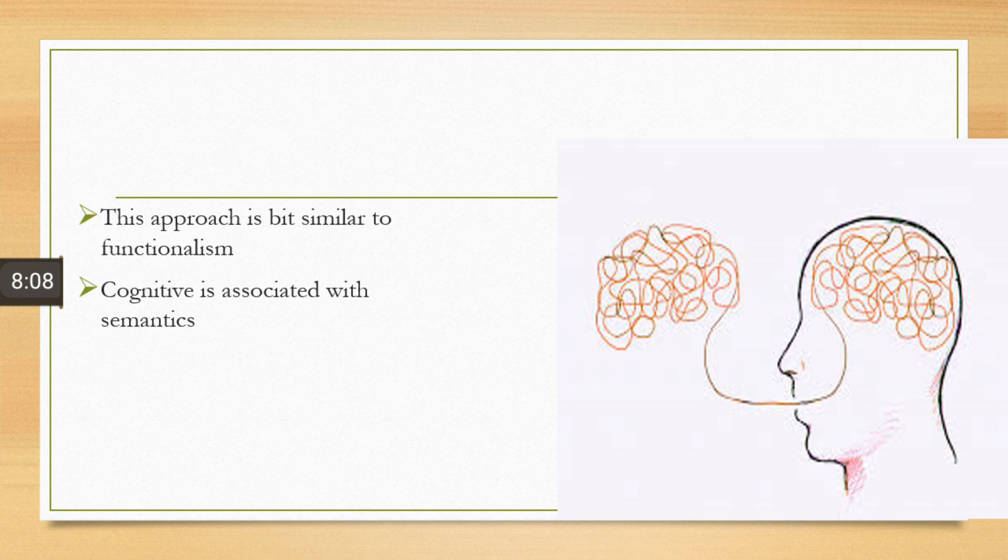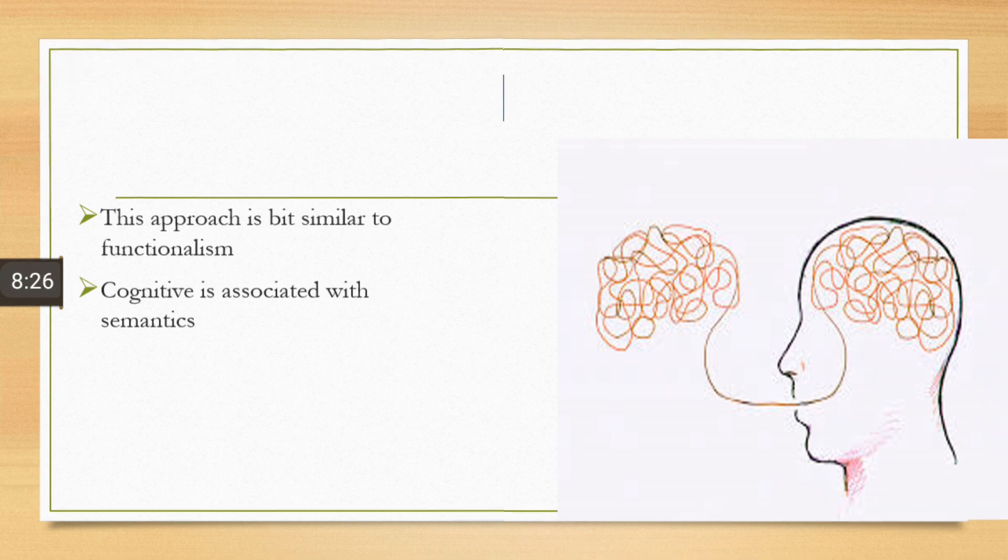If I say apple, apple is a symbolic representation of language. But the original entity or idea is that fruit. In this way, we use words in order to create meanings. So cognitivism is associated with semantics as well.